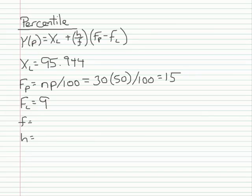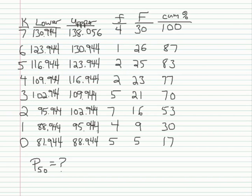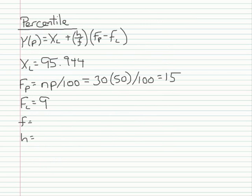Next, I need to find f, which is the frequency of the interval containing the percentile point. The third interval contains the percentile point, and the frequency of that interval is 7. Now, if you remember from the demonstration on how to create a grouped frequency distribution, I created this distribution using an interval width of 7. So h equals 7.